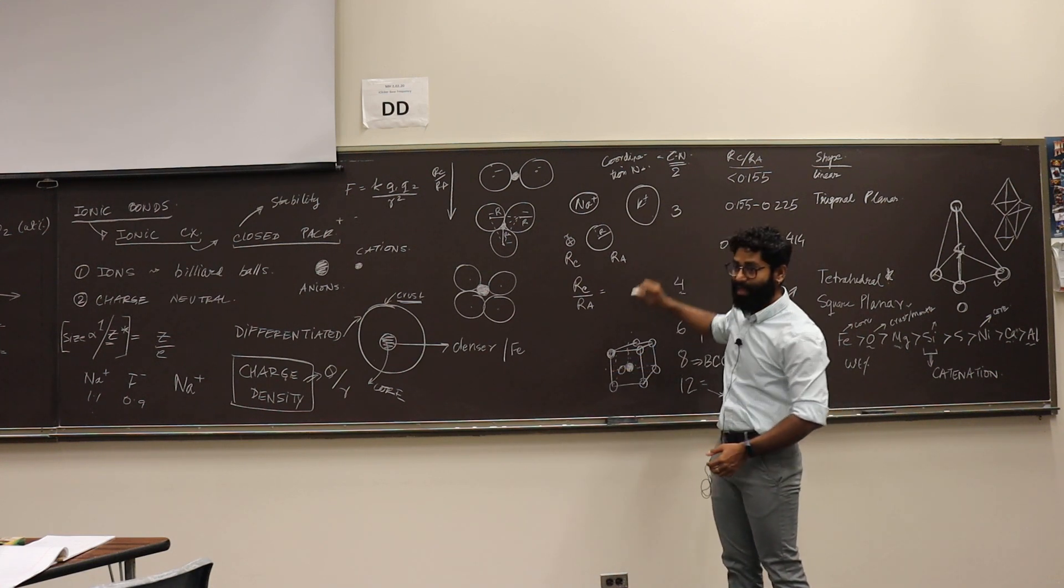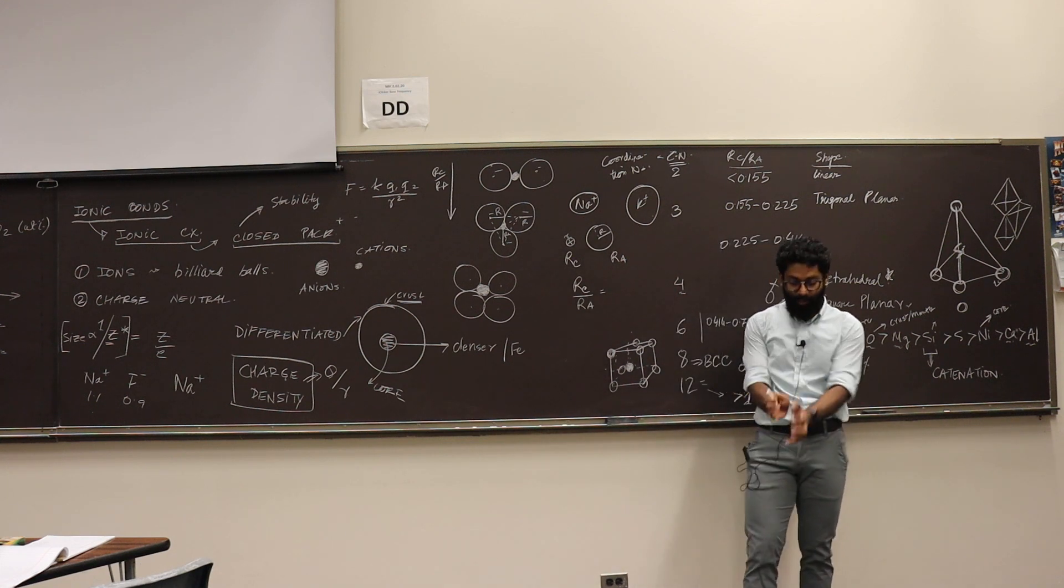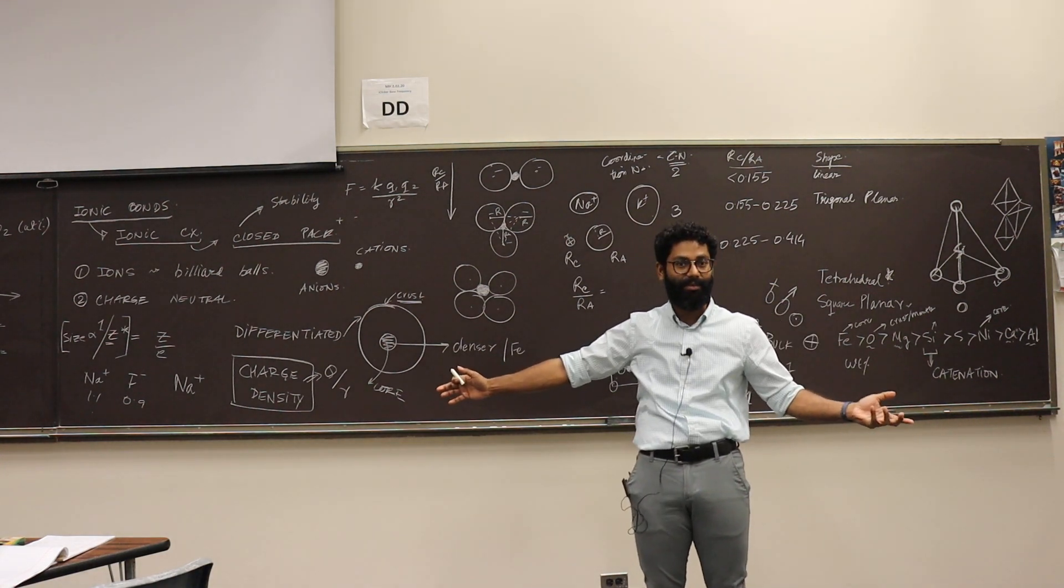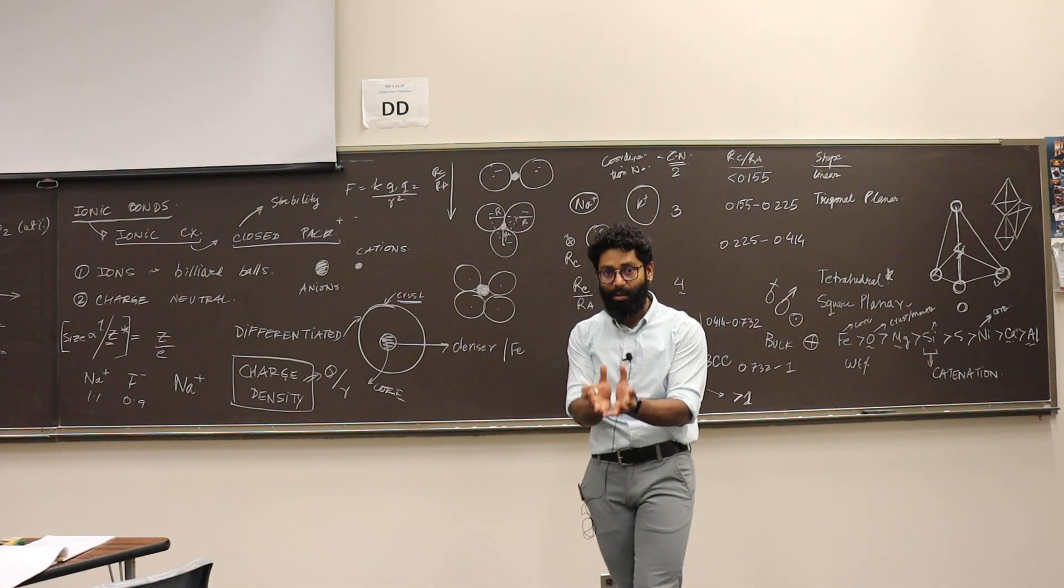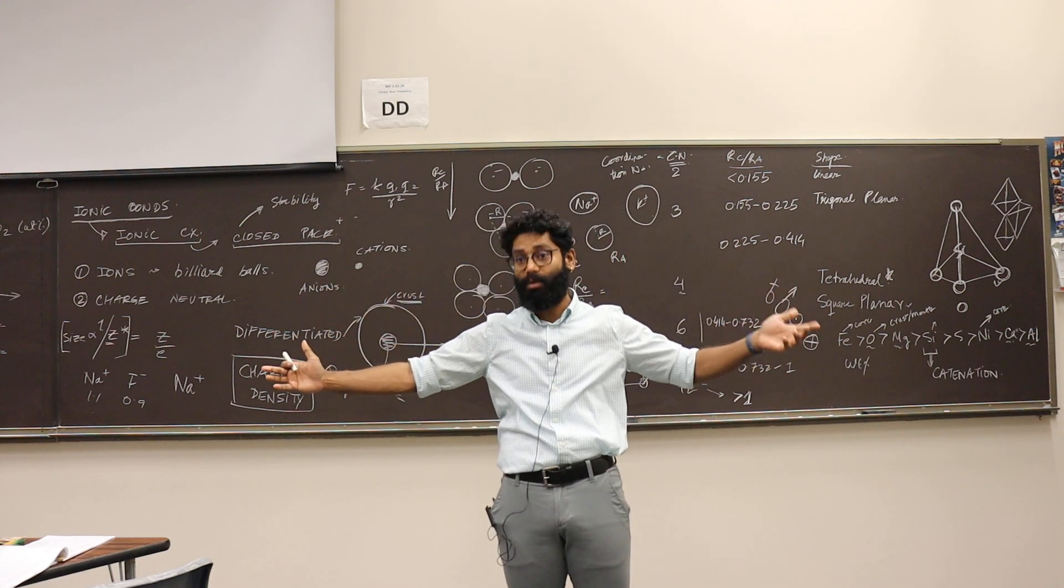The same one charge is distributed in the greater volume in K+, so this one has less charge density. Smaller things will have more charge density, bigger things will have less charge density generally. So when you have smaller molecules with higher charge density, its hydration is going to be that much more.